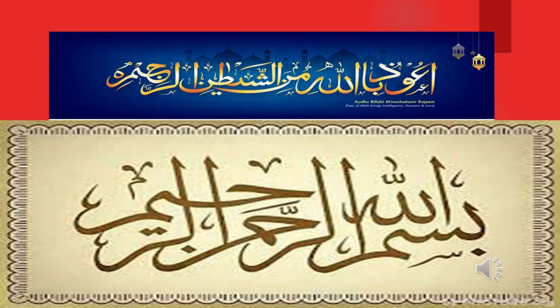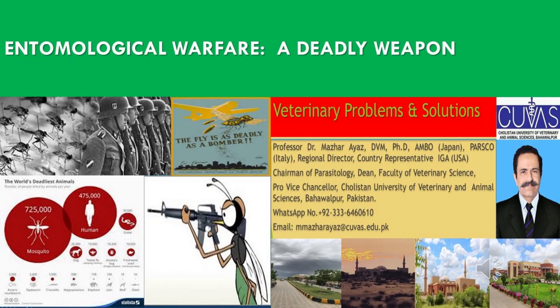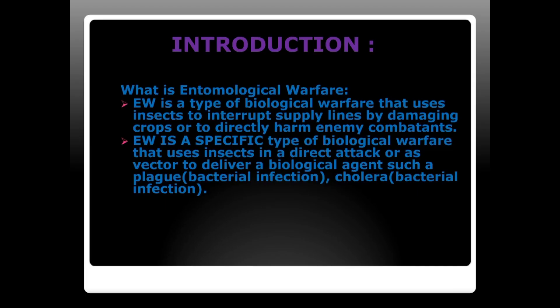The topic of discussion is entomological warfare, subtitled historical and contemporary overview. Entomological warfare is a type of biological warfare that uses insects to disrupt supply lines by damaging crops or to directly harm enemy combatants. It is a specific type of biological warfare that uses insects in a direct attack or as a vector to deliver a biological agent.